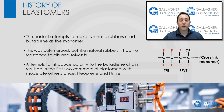Before we dive into CalRez and FFKM, let's go over some history of how elastomers came to be. The earliest attempts to make synthetic rubbers used butadiene as the monomer. This was polymerized, but like natural rubber, it had no resistance to oils and solvents, since it was nonpolar by nature. Attempts to introduce polarity to the butadiene chain resulted in the first two commercial elastomers with moderate oil resistance: neoprene and nitrile elastomers.